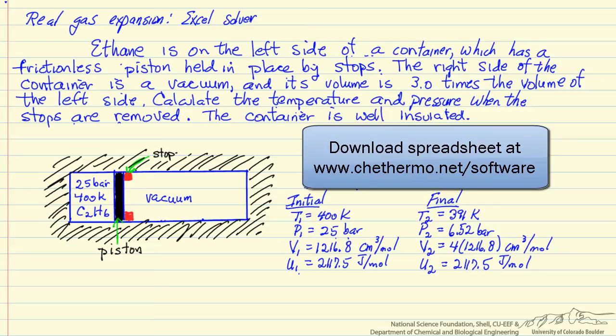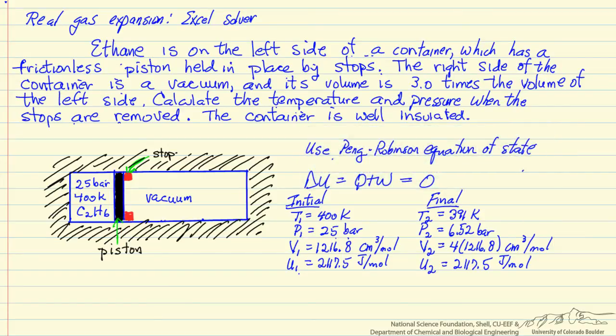The spreadsheet is available online, and we are going to use Excel Solver to determine the final conditions. The initial conditions are indicated here and these are obtained from the spreadsheet, which I will show shortly how that was done, and then the final conditions, as presented in the previous screencast, are here.